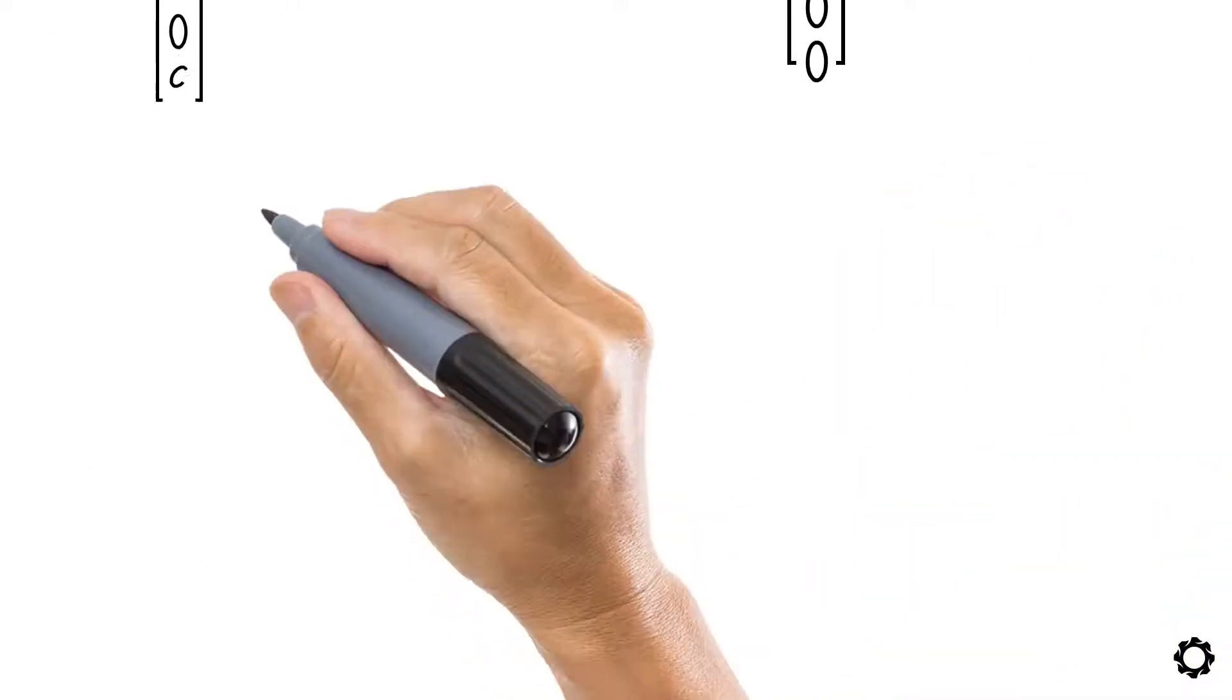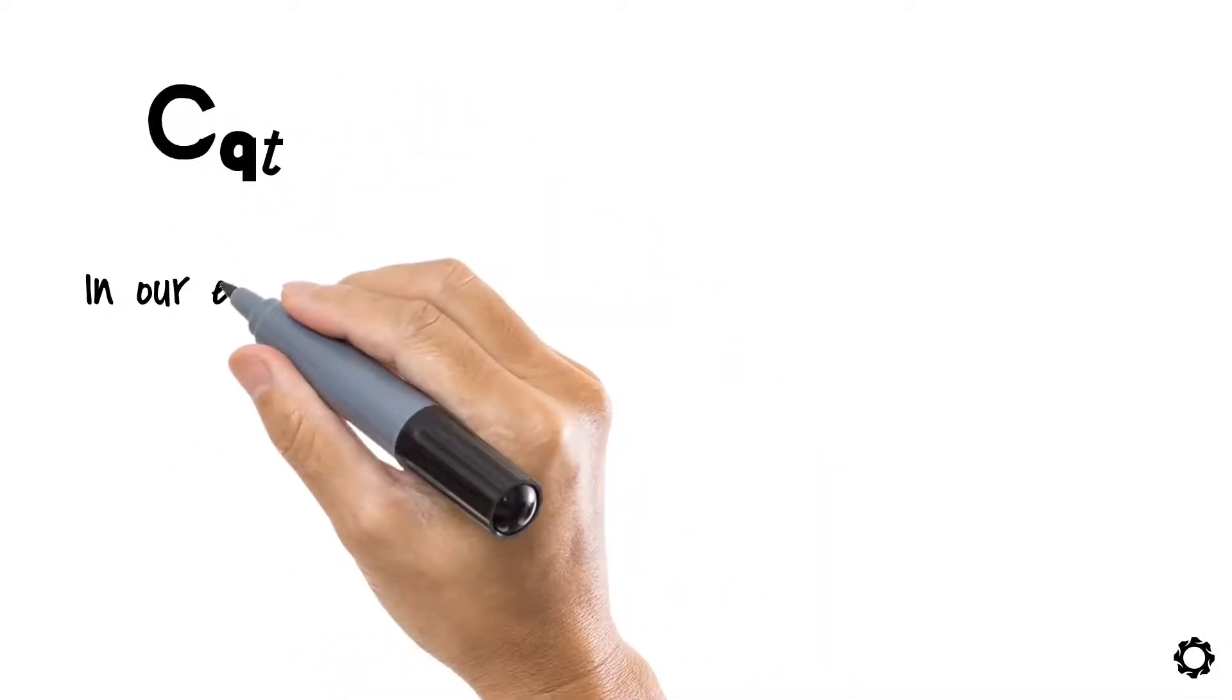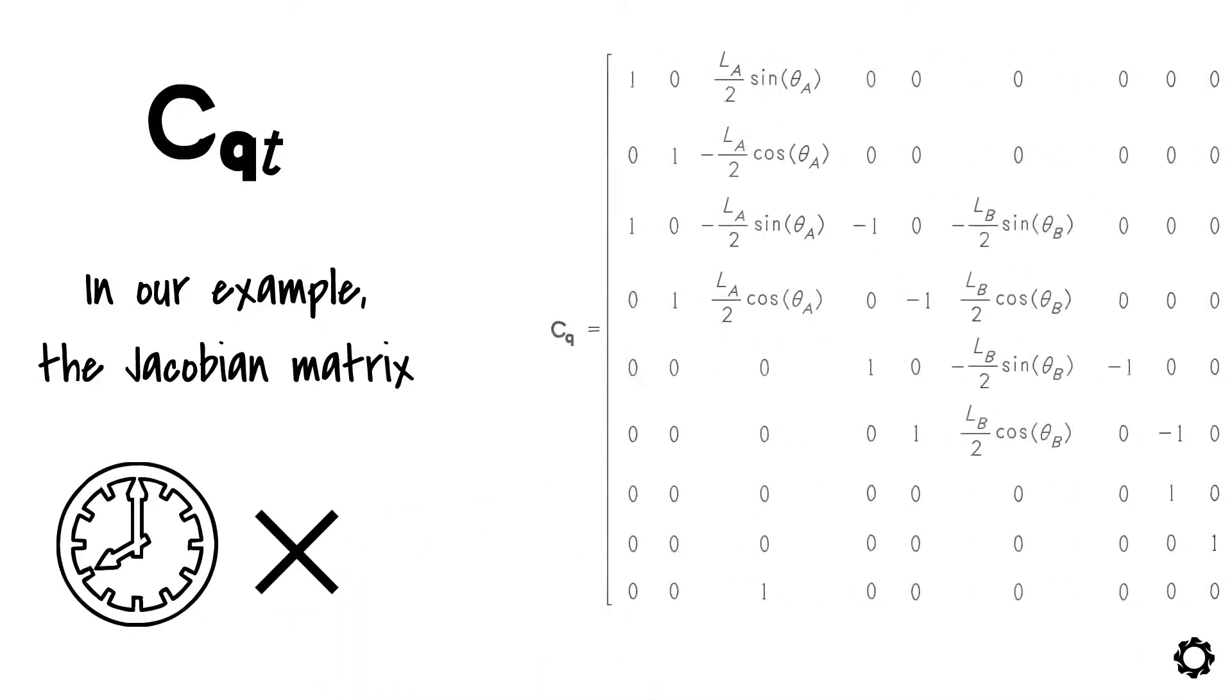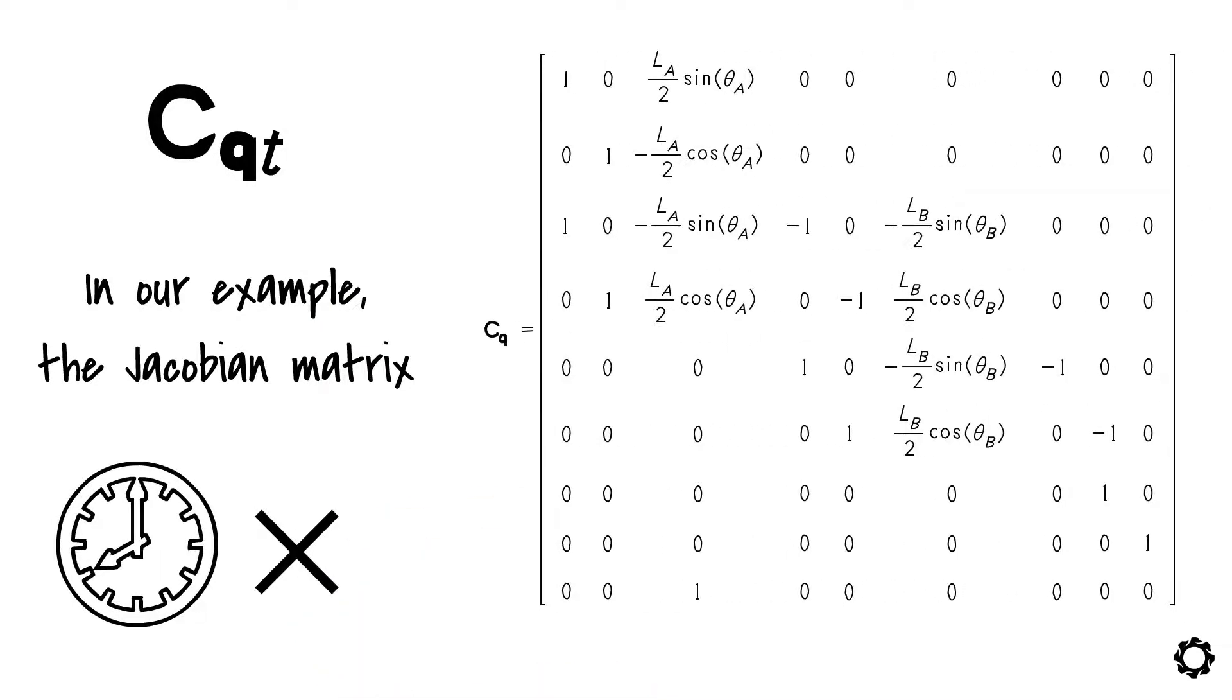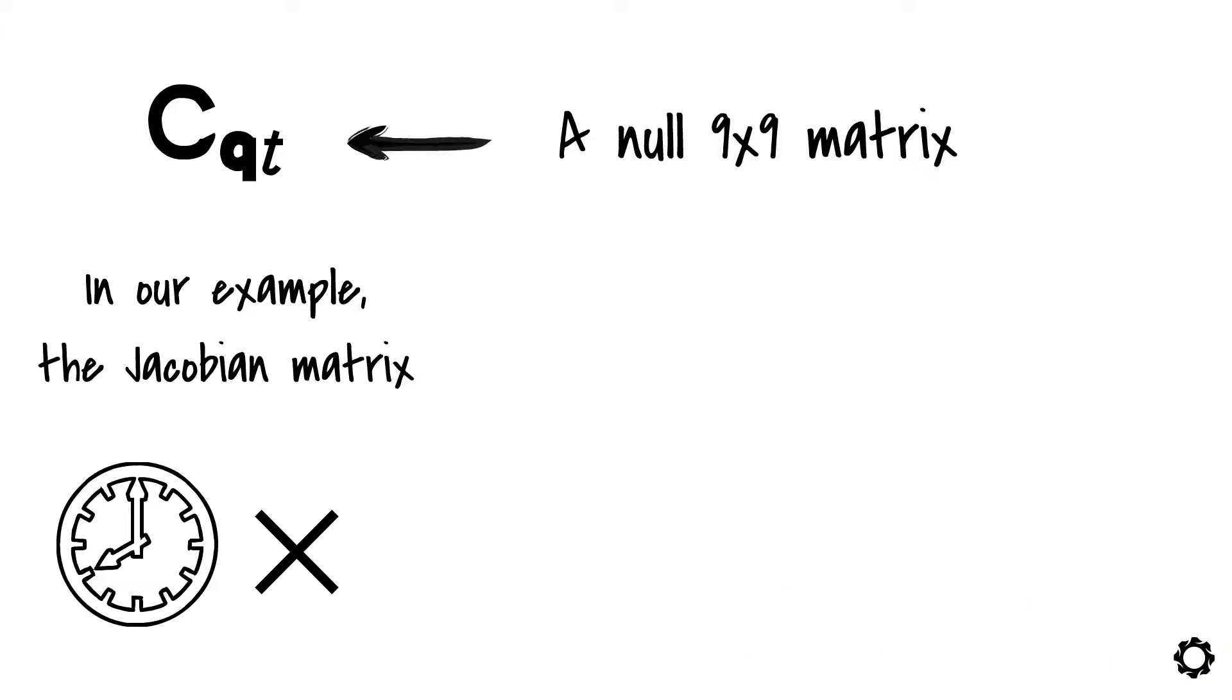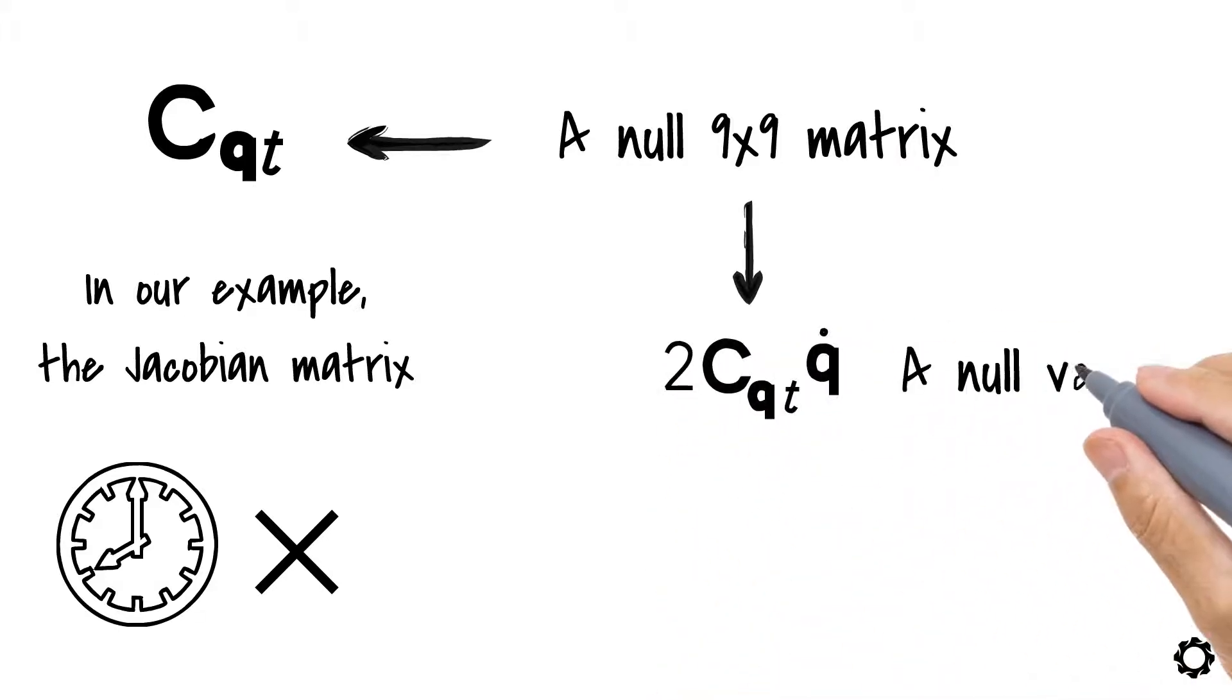Now let's differentiate the Jacobian matrix with respect to time. However, in our example, the Jacobian matrix does not depend on time. This means that our result will be a null 9 by 9 matrix, rendering the product 2 times cqt times q dot a null vector.